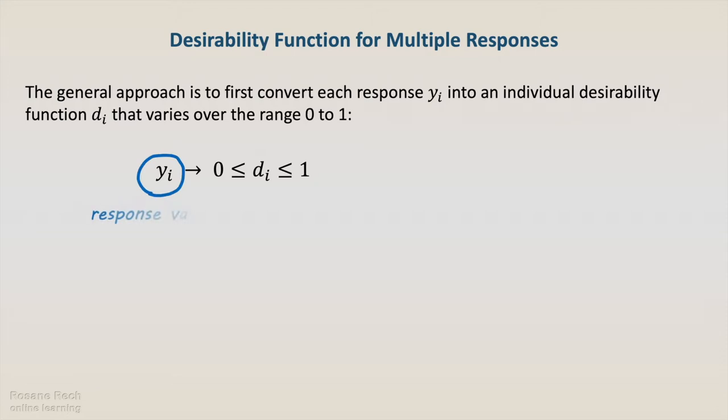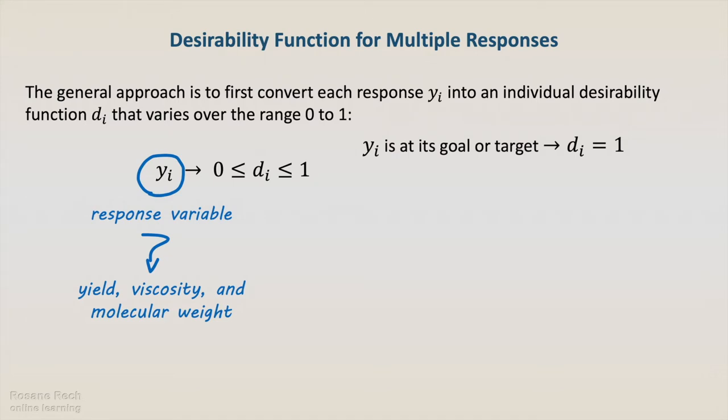yi is each of the response variables, in our example, yield, viscosity, and molecular weight. The output of the desirability function must be 1 if yi is at its goal or target, and 0 if the response variable is outside an acceptable region.